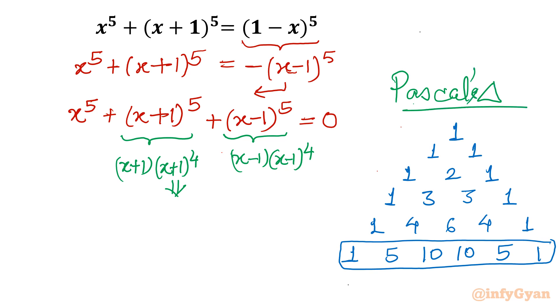Let us consider our equation. See the coefficients are 1, 5, 10, 10, 5, 1. So I will write here x power 5 plus x plus 1 whole power 5 plus x minus 1 whole power 5 equal to 0. And our coefficients are 1, 5, 10, 10, 5, 1.